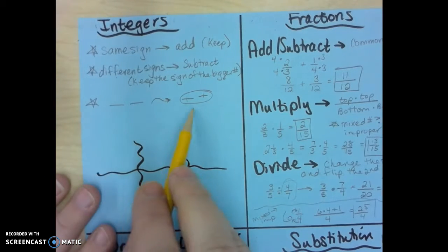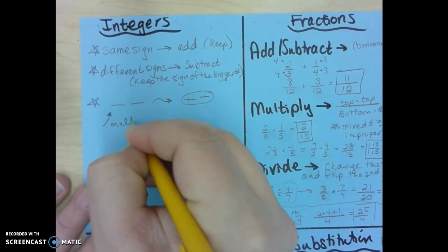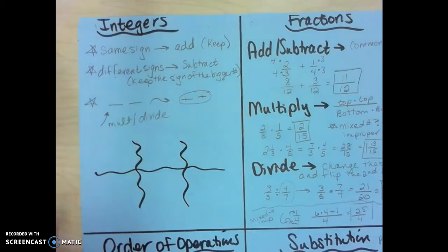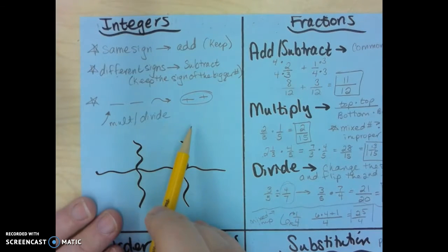Now, when you have multiplying and dividing, this is the only rule you use. Whenever you multiply and divide, you do the problem, and then you see how many signs there are, and you circle them and make them plus.